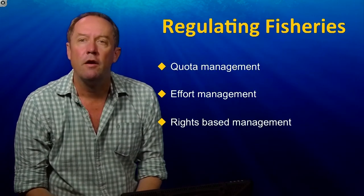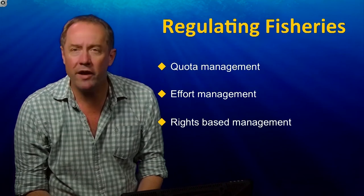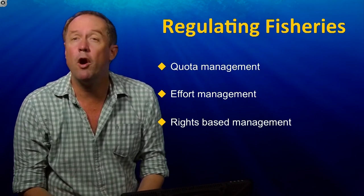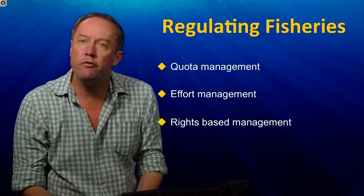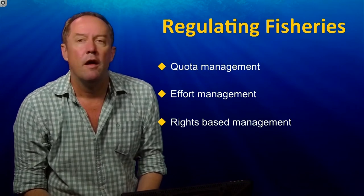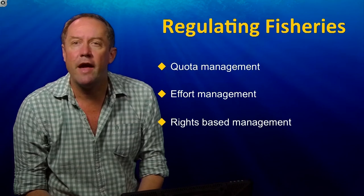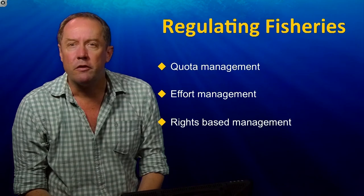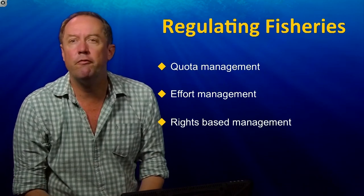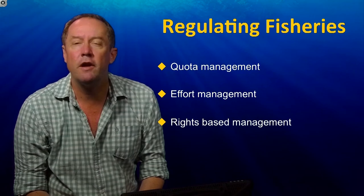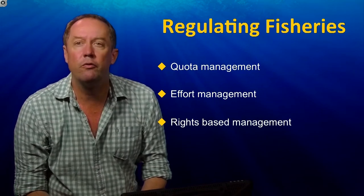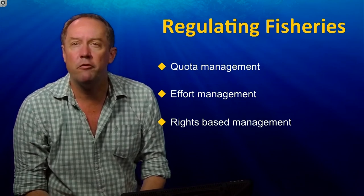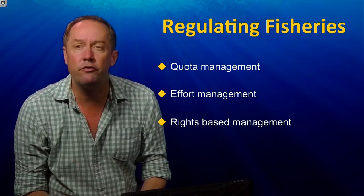So how can we avoid the tragedy of the commons? One approach is to manage quotas — that is, only a certain amount of fish can be caught by all the fishers. Another is to manage effort, which might mean there can only be so many boat days out on the water. And finally, we can have rights-based management, which puts the ownership of the fishery in the hands of a few people who own the fishery. This is what Juan Carlos Castilla is going to talk to us about in terms of Chilean near-coastal fisheries, where rights-based management has led to long-term sustainable profits.